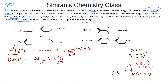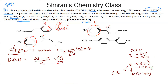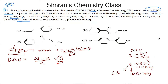Looking at each option, in option D we have three double bonds and one ring, giving four degrees, plus one carbonyl C=O, totalling five. All options give the same five degrees of unsaturation, so we cannot rule out any option based on degree of unsaturation alone. Normally we could eliminate options if they differed, but here all give five.